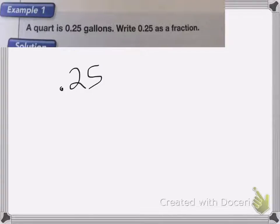When we look at this decimal, a quart is 0.25 gallons, write 0.25 as a fraction. We first need to figure out what place value the last number given is in. We would count tenths, hundredths. So we know we're in the hundredths place value.